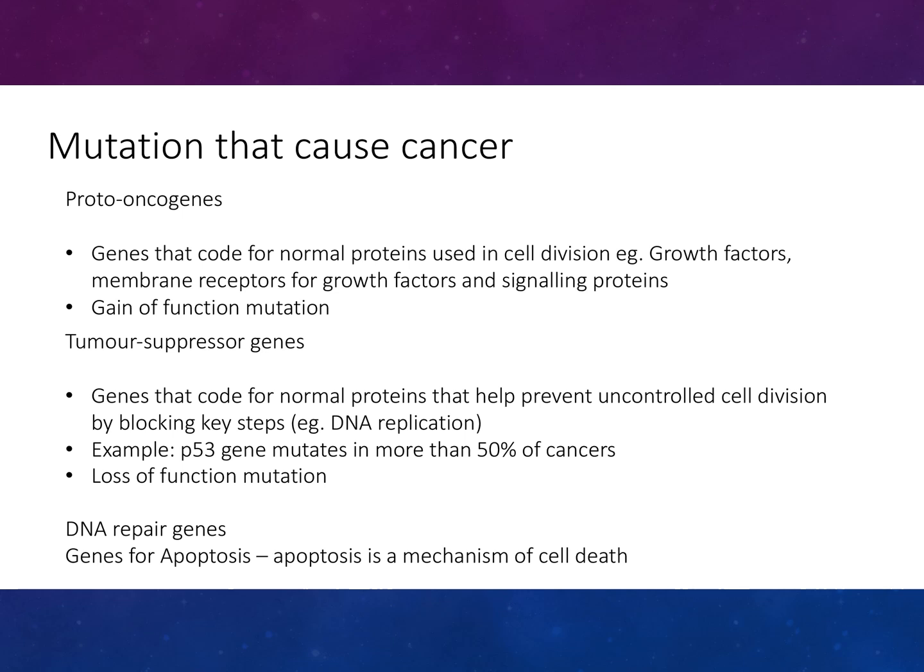Proto-oncogenes are genes that code for normal proteins involved in cell division — growth factors, membrane receptors for growth factors, and signalling proteins — also known as a gain-of-function mutation. Tumour suppressor genes code for proteins that help prevent uncontrolled cell division by blocking key steps such as DNA replication. An example is the P53 gene, which is mutated in 50% of cancers — this is known as a loss-of-function mutation.